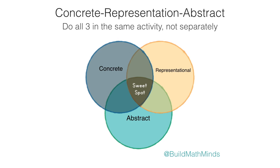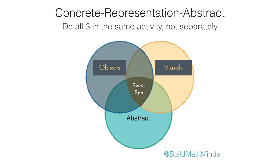Just a refresher on what the CRA model really is. It's the Concrete, the Representational, and the Abstract. If you've never heard of this, I'll link below to a video I did all about the CRA model. The idea is kids need to be using objects — that's the concrete phase. They need visuals and models to represent the mathematics happening — that's the representational phase. And the abstract phase is when they're working in just the symbols. There's a time and place for each, but oftentimes it's nice to be working in all three at the same time, which is what I call the sweet spot.